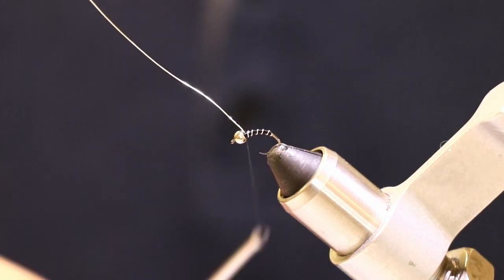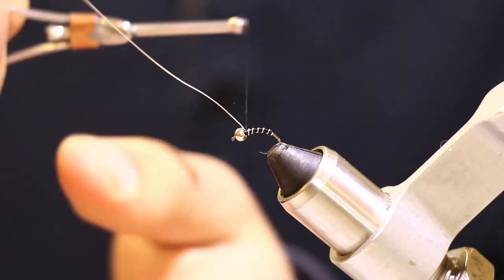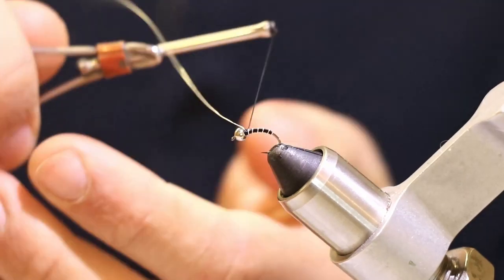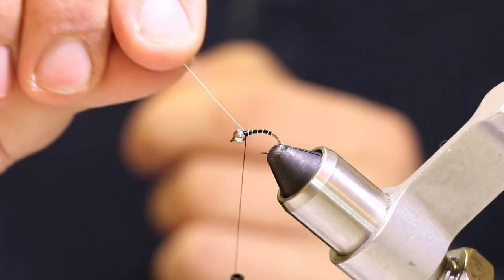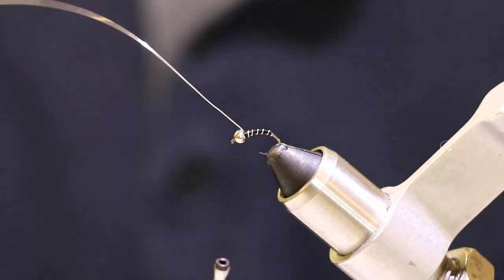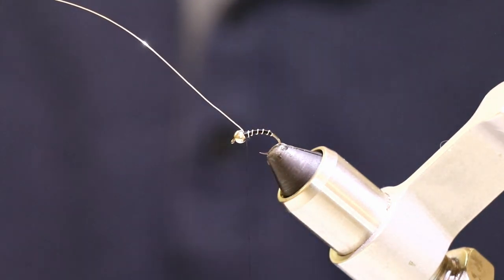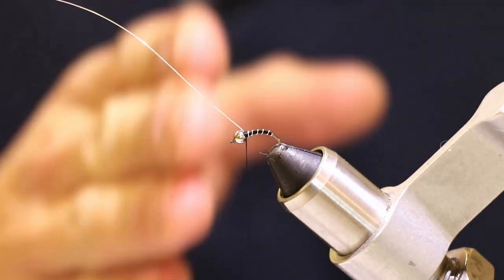So I'm simply just going to get my thread and just wrap right behind this wire here. Cinch down that wire make sure it's good. I like to make about, I don't know it depends on how big your collar wants to be on this fly, but I like to make about five to six wraps.